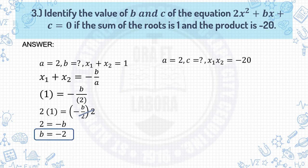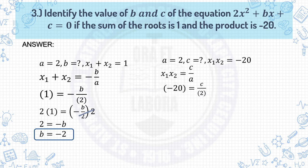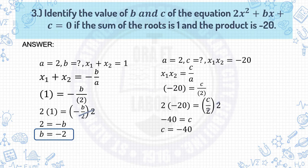Next, to determine the value of c, you need the value of a which is 2 and the product of the roots which is negative 20. Using x₁ times x₂ equals c over a, substitute the product negative 20 and a equals 2. Simplifying by multiplying both sides by 2: 2 times negative 20 equals negative 40. So the value of c is negative 40.